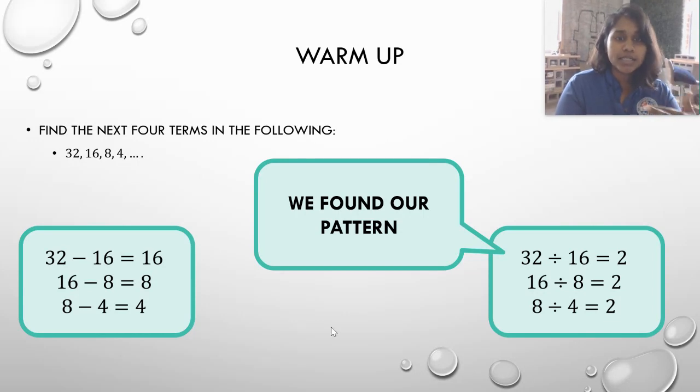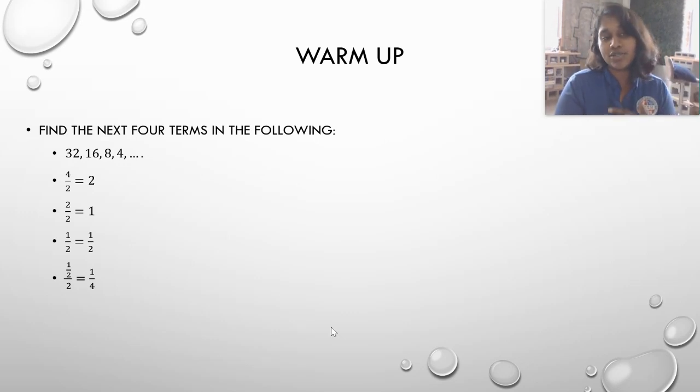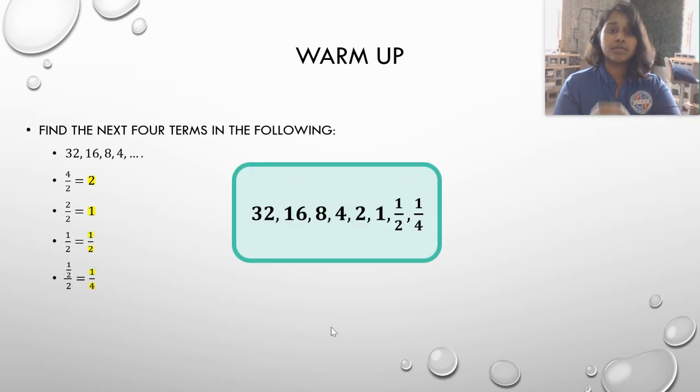So we're going to go ahead and continue on with that pattern. 4 divided by 2, 2 divided by 2, 1 divided by 2, a half divided by 2, so on and so forth. And we end up with the following four terms of the sequence. So that's it.